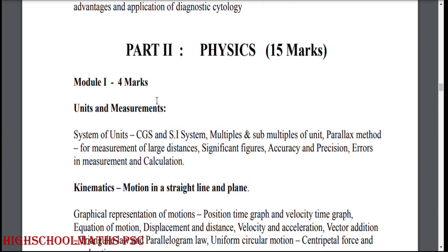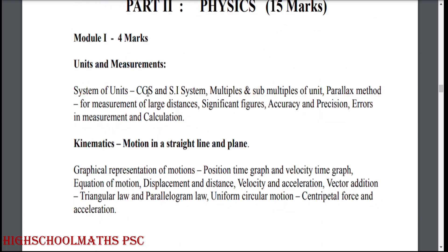Part 2, Physics, 10 marks — plus 2 level. Module 1: Units and measurements. Systems of unit — CGS and SI. Multiples and submultiples of units. Parallax method for measurements of large distance. Significant figures. Accuracy and precision. Error in measurement and calculation.